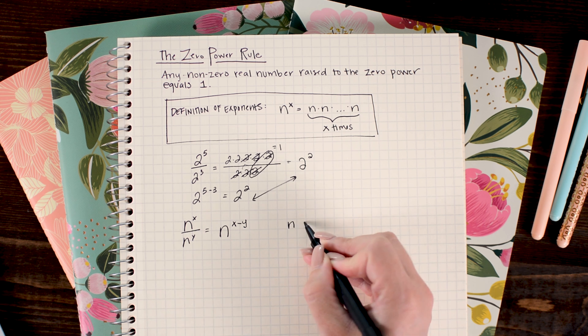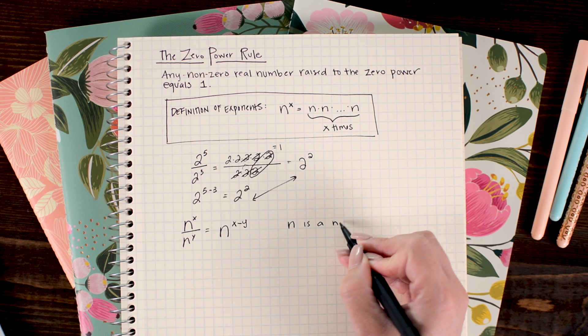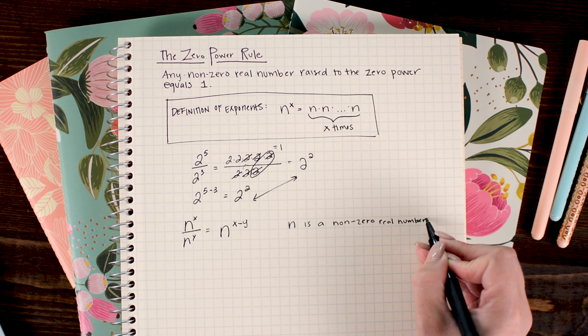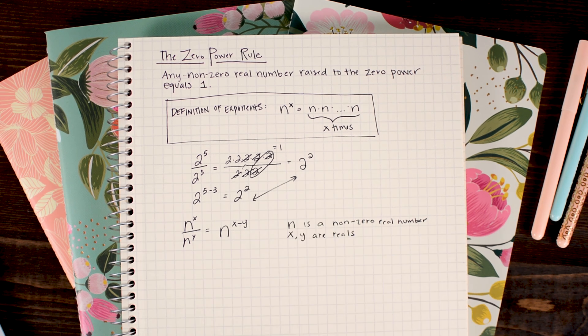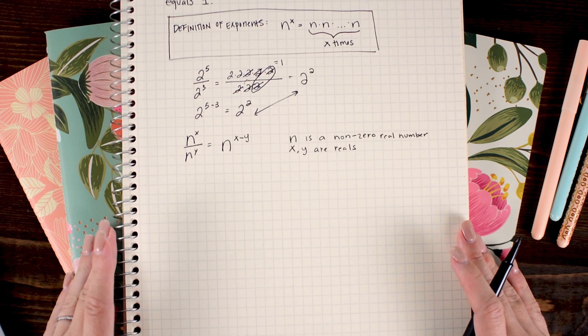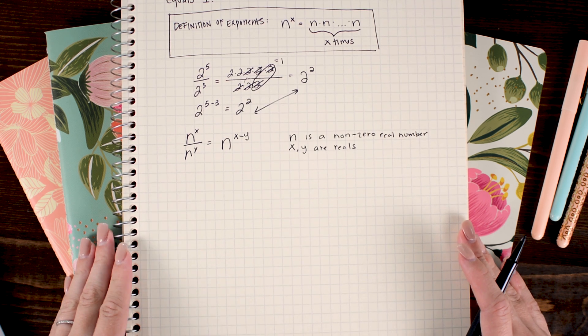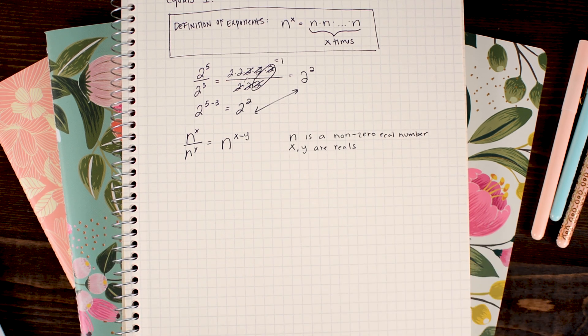Where n is a non-zero real number and x and y are reals. So that's the information that you need to know to understand what we're going to do. All right, are you ready?